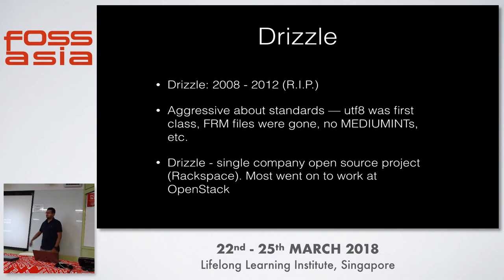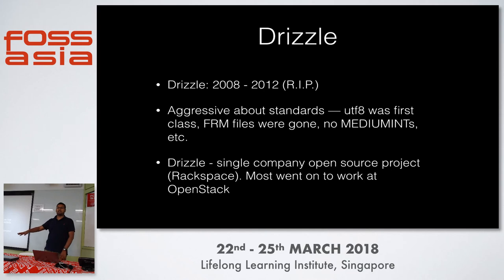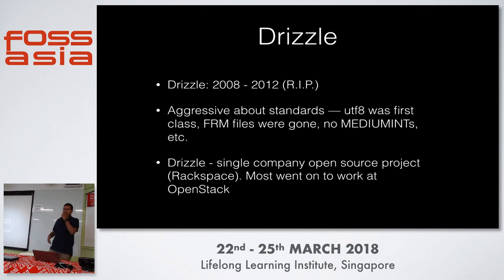Drizzle will also teach you something else about making a fork: if you all work in one company and you're the only people contributing to that fork, and that company changes its priorities — like Rackspace saying 'go work on OpenStack, we're not interested in a database anymore' — then the project dies. This is something you need to think about when you decide to use software.